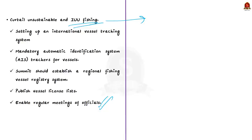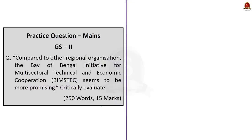In this discussion we saw about BIMSTEC — why it is important — and about the Bay of Bengal, its significance, and the issues in the Bay of Bengal. Finally, we saw that those issues could be resolved through regional integration of the BIMSTEC countries, and what should be done to achieve that regional integration.